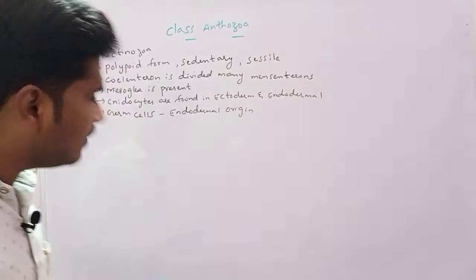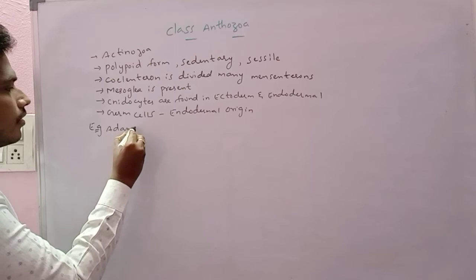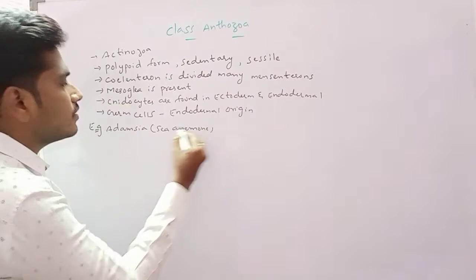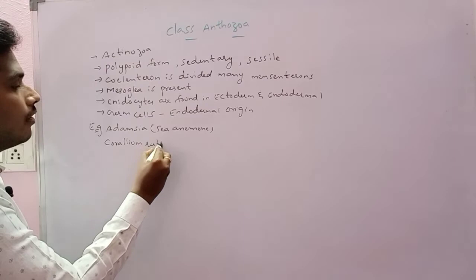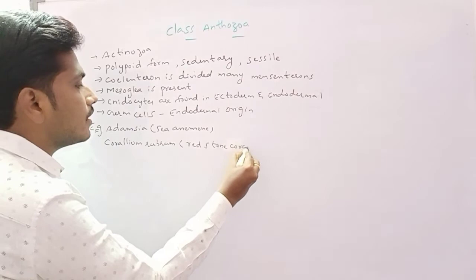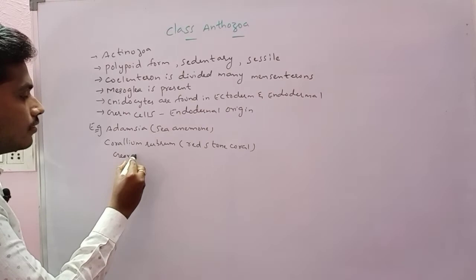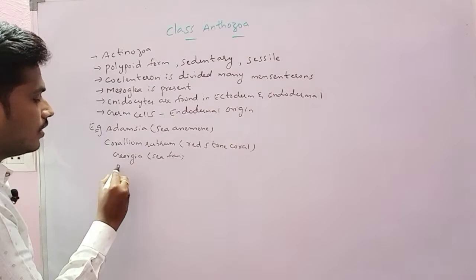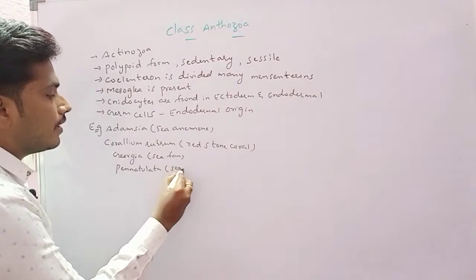Examples. If you are taking up the anthozoans here: Adamsia or sea anemone, Corallium rubrum—it is a precious red coral, precious red coral—then Gorgonia, then Gorgonia sea fan, and Pennatulata, sea pen. These are the examples of the anthozoans or actinozoans particularly here.